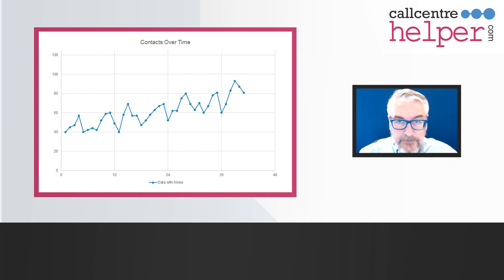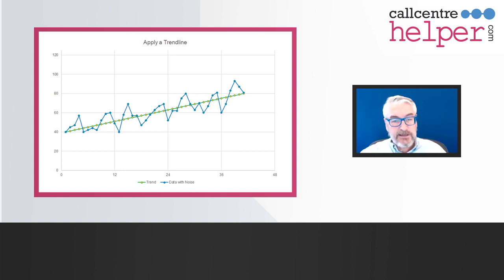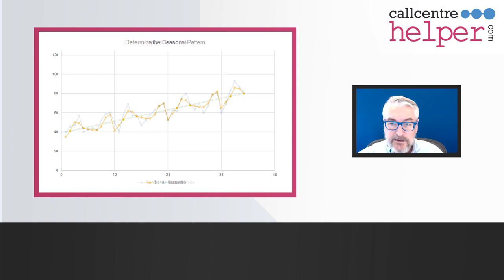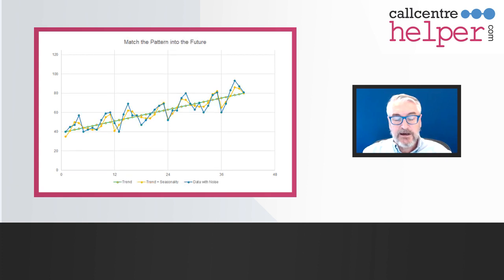The first thing you can do with that data is try and work out some form of trend line. This is a linear trend line that we've applied here. Once you've got the linear trend line, you then try and determine some form of seasonal pattern — getting a regular seasonality added to that data. Then, once you've built your seasonality model and your trend line, you can use that data to predict off into the future.